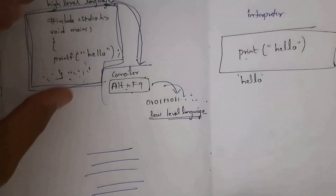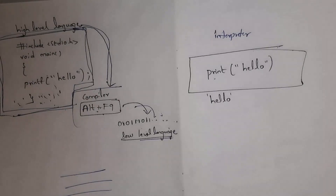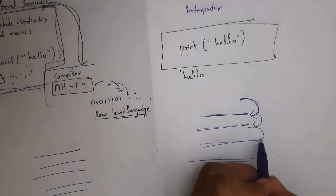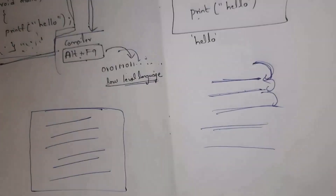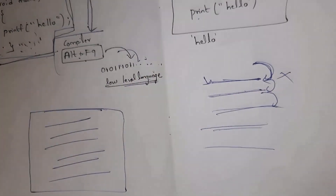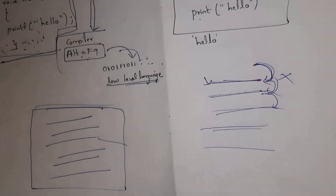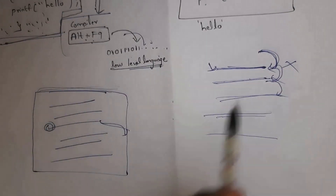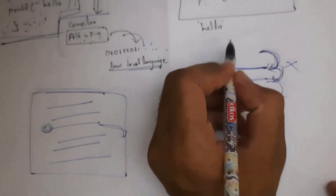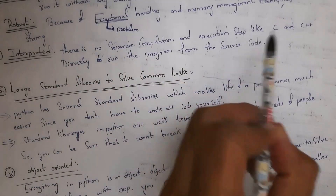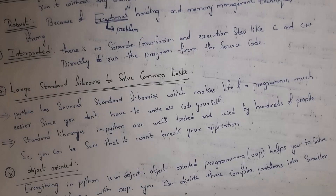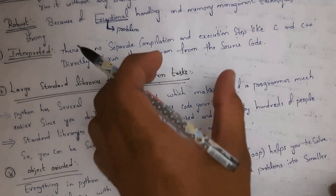In the interpreter, execution takes place line by line. For example, if I write five lines of code in Python, after executing the first line it goes to the second, then the third. If any error occurs in the first line, execution stops there. In a compiler, if there is an error in the third line, the compiler displays that error after processing all lines. The interpreter also occupies less memory compared to the compiler.